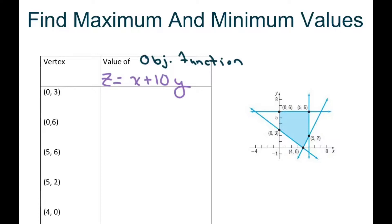Hi everyone, we're going to find maximum and minimum values given our objective function, which is z equals x plus 10y. We have the graph and we are pulling out the corner points which I already did. I wrote them in a table here as the vertex, and all we're going to do is plug in the values to find the max and min.